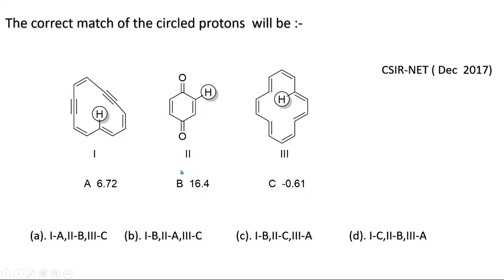For molecule number two, the value 2a is only given in option B. So by knowing this much information, you can figure out that option B is the correct answer. Now if you want to know why one proton resonates at a higher value (more deshielded) and another proton resonates at −0.61 (much more shielded), you need to understand the ring current effects.